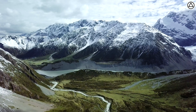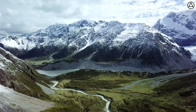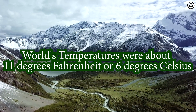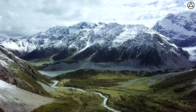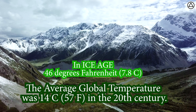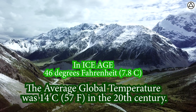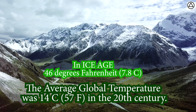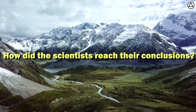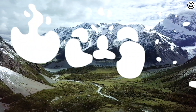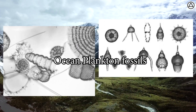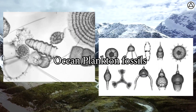Overall, the new paper found that the world's temperatures were about 11 degrees Fahrenheit, or 6 degrees Celsius, less warm than today. If you're comparing the average global temperature of 14 Celsius — that's 57 Fahrenheit — in the 20th century, how did the scientists reach their conclusions? The team used models that connected data from ocean plankton fossils to sea surface temperatures.